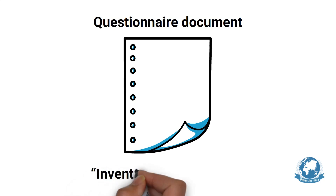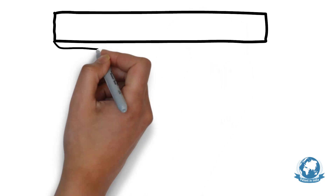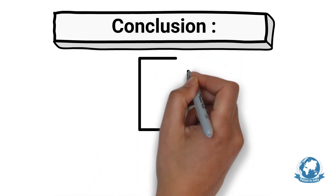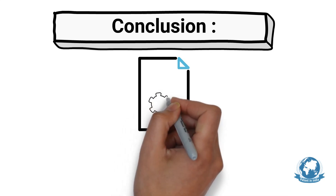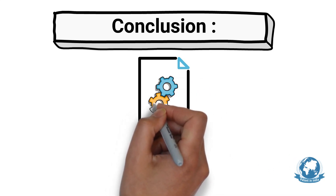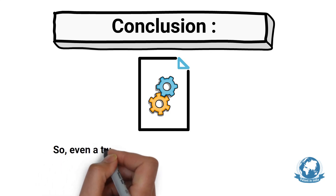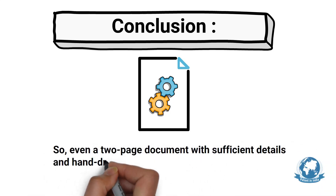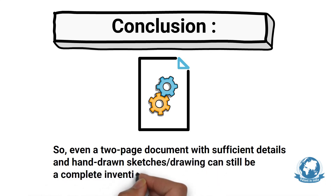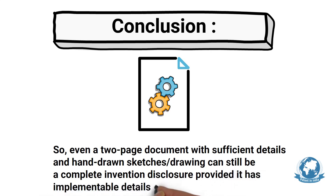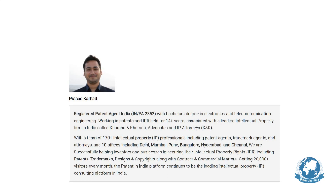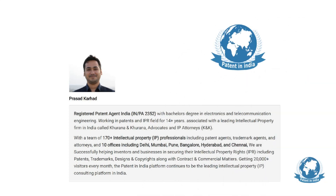Generally, patent attorneys or intellectual property firms have a questionnaire document called an invention disclosure form to help you gather the right information. In conclusion, writing a complete invention disclosure is not about its specific format but about the implementable details of your invention, which should clearly communicate the inventive step to the patent attorney so that he or she can write a patent application to best protect your invention. Even a two-page document with sufficient details and hand-drawn sketches can be a complete invention disclosure, provided it has implementable details. For more information on patents, you may visit patentinindia.com.